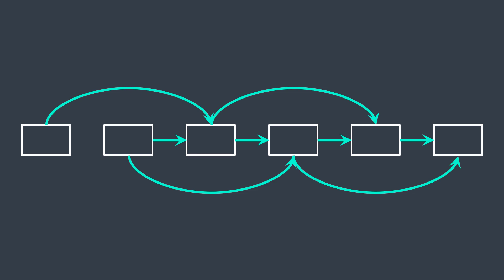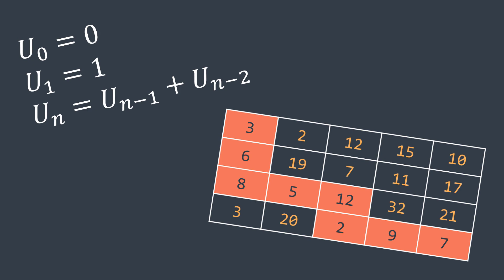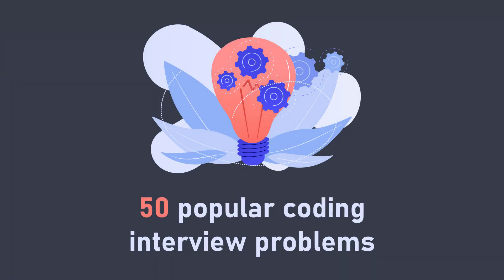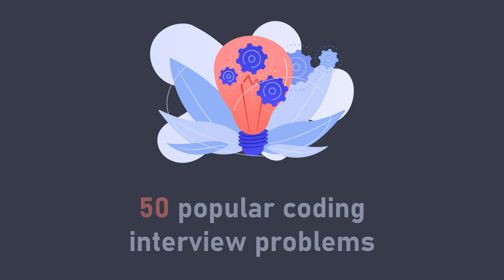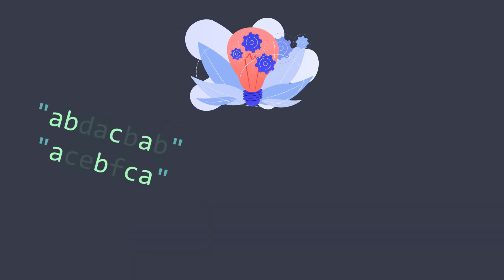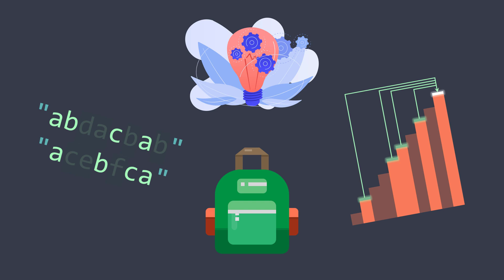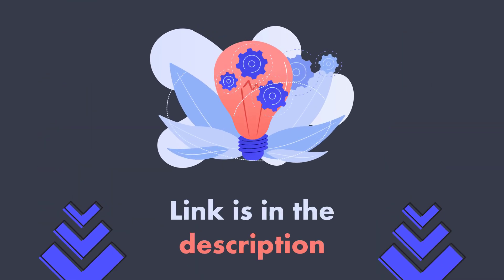If you liked how I explained these two DP problems, I suggest you take the '50 Popular Coding Interview Problems' inside code course. It contains 50 interesting and challenging coding problems that will grow your knowledge in algorithms and data structures. Some are related to dynamic programming, like the longest common subsequence problem, the 0/1 knapsack problem, and the ways to climb stairs problem. The link is in the description.